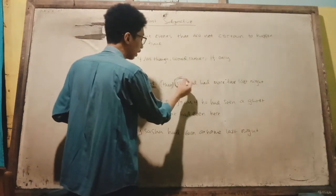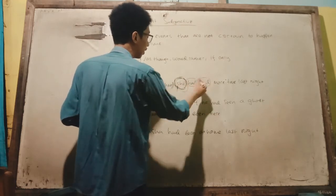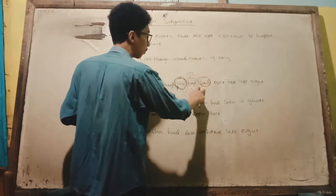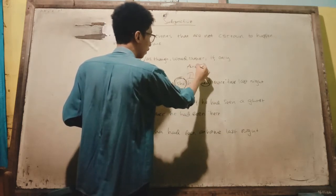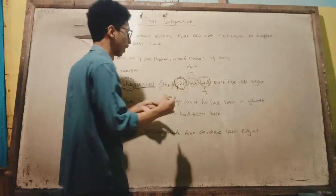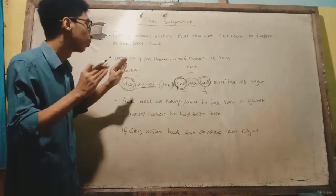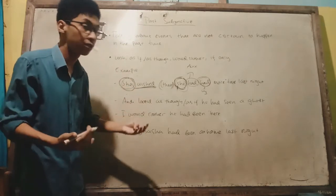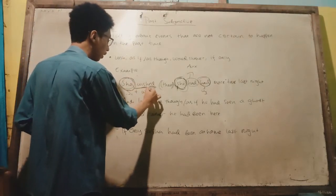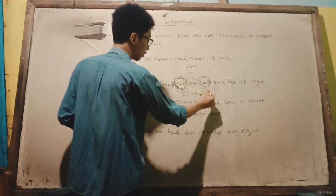After the second subject, we have 'had,' which is the auxiliary verb, and then the verb in its third form. 'Had had' — it is past perfect. So the pattern for past subjunctive with 'wish' is: first subject + wish/wished + second subject + had + verb three.